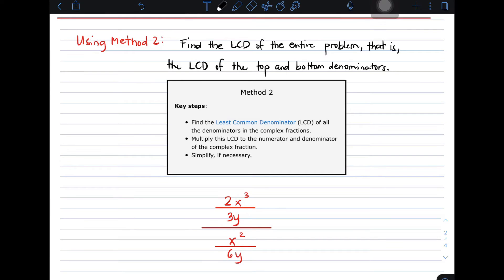In method number 2, you find the least common denominator, or LCD, of all the denominators of the complex fraction. Next, multiply this LCD to the numerator and denominator of the complex fraction. And lastly, again, simplify if necessary.